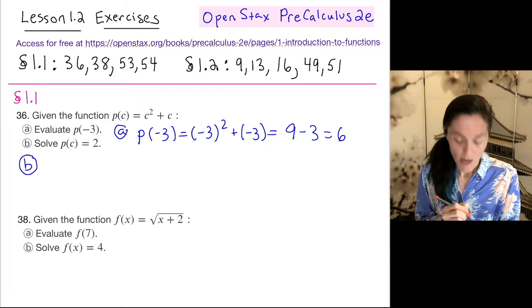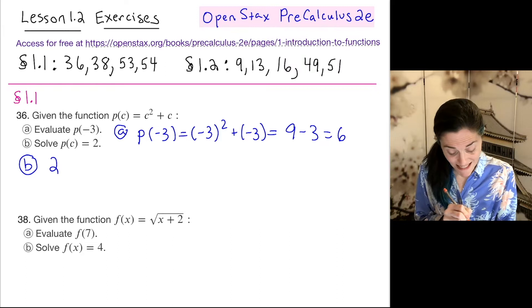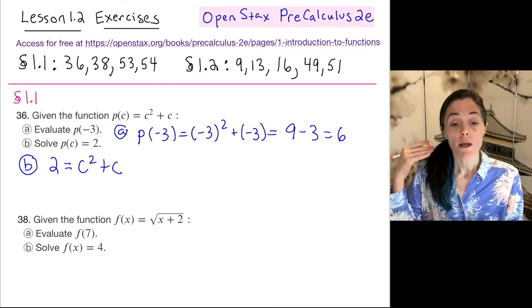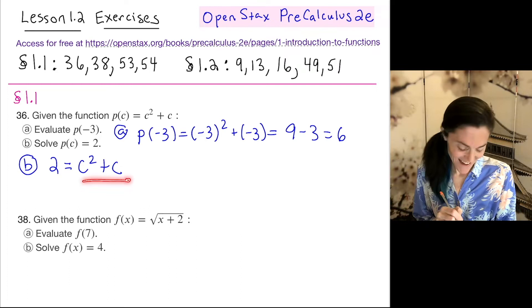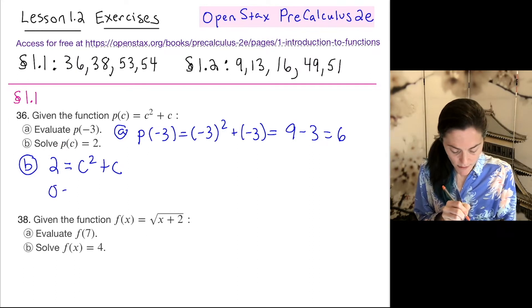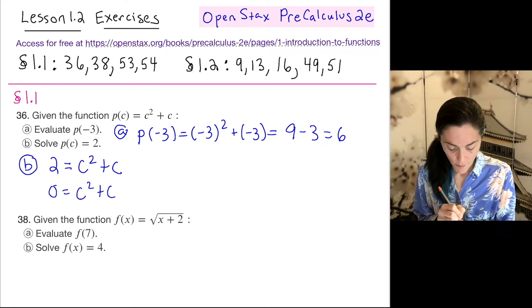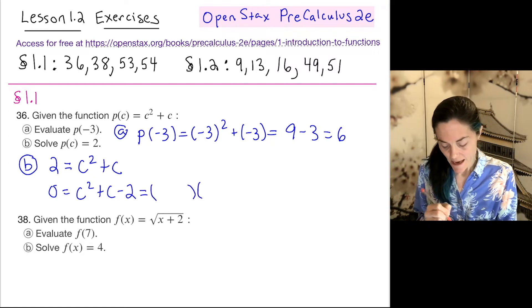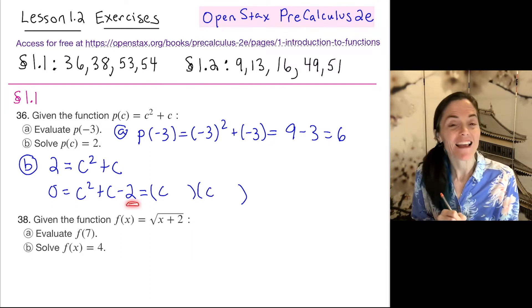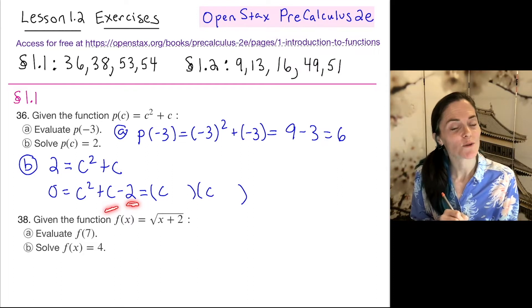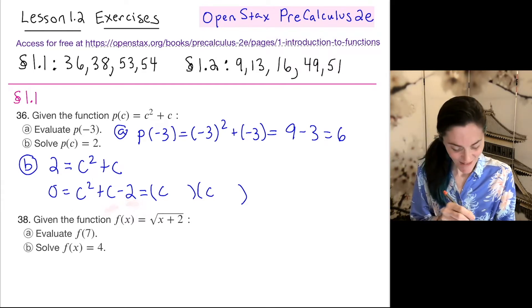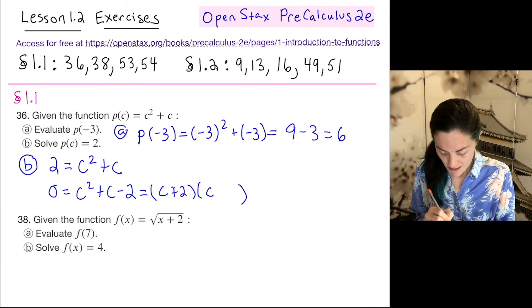Now for letter b, we want to solve p(c) equals 2. So we set 2 equal to p(c) and find c. Typically, if we have a quadratic on one side, we want to set it equal to 0 so we can factor. So let's do this. We can subtract 2 from both sides. The question is, how does this factor? Well, I need two numbers that multiply to negative 2 and add to 1. So how about positive 2 and negative 1?